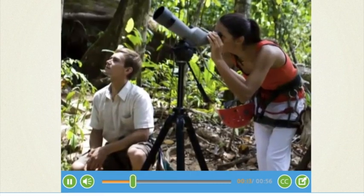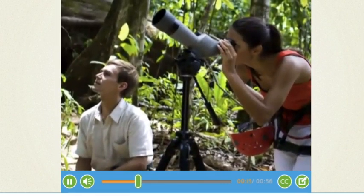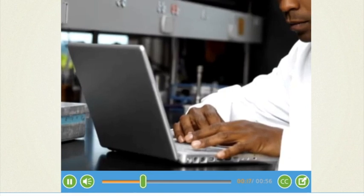A telescope is a tool that can help you see far away objects. A computer is a tool that can help you find information and analyze data.